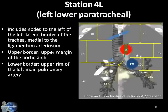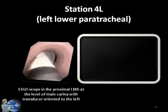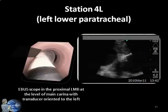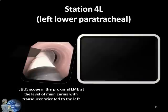Station 4L includes nodes to the left of the left lateral border of the trachea, medial to the ligamentum arteriosum. Its upper border is the upper margin of the aortic arch, and its lower border is the upper margin of the left main pulmonary artery. To visualize Station 4L, the scope is placed in the proximal left main bronchus at the level of the main carina, and the scope is turned to the left towards the 9 o'clock position. The lymph node is seen above the pulmonary artery located at the 9 o'clock position distally, and below the aortic arch found at the 3 o'clock position proximally.